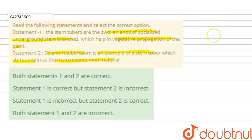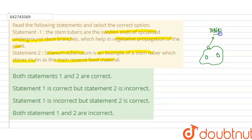They are asking about stem tubers. What do we mean by stem tubers? For example, in a potato we have certain eyes of the potato. These eyes of the potato are known as the tubers, and these tubers are basically the nodes of the stem. Hence these are known as stem tubers.